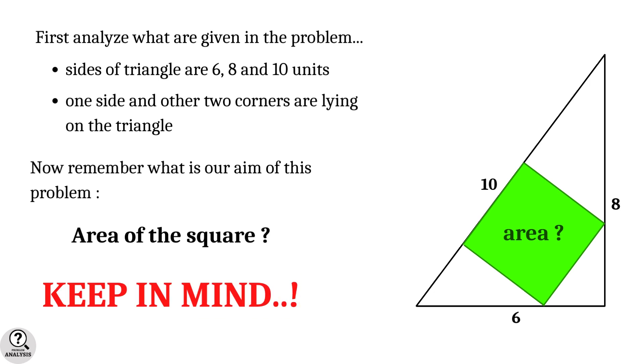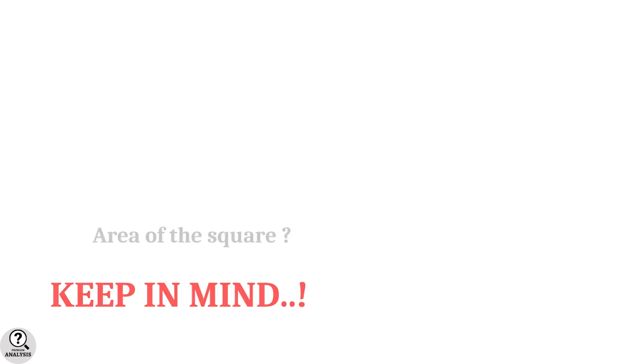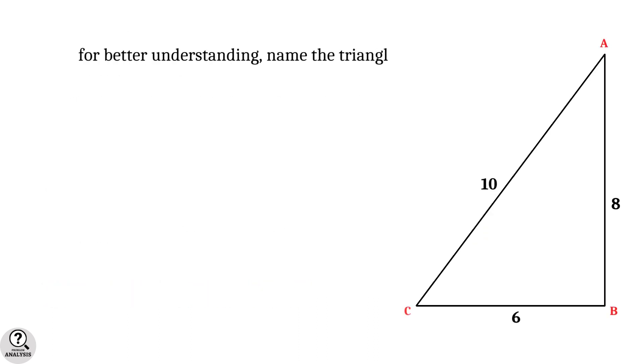This is the structure of our problem. For better understanding, let's denote the triangle by ABC. Now I have a question: can you find anything special about this triangle? We know that 6 squared plus 8 squared equals 100, which is equal to 10 squared.